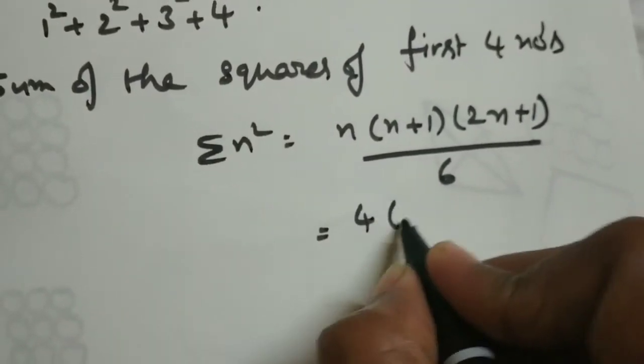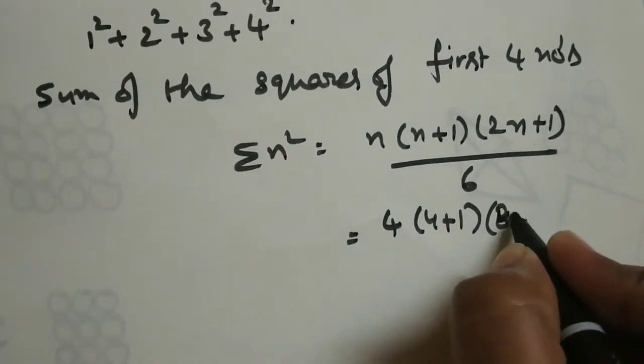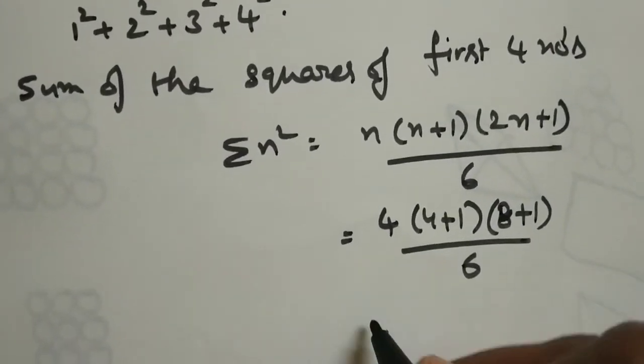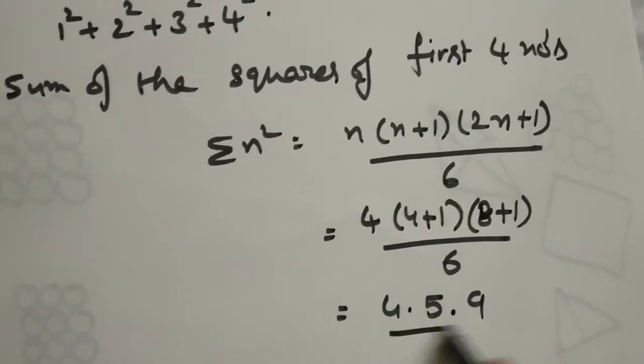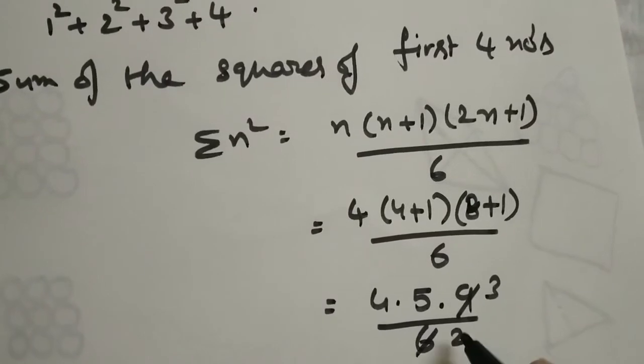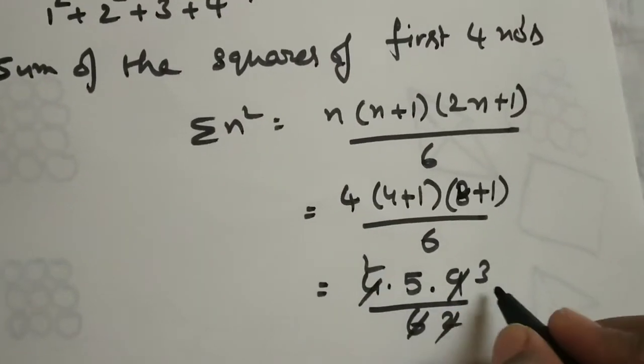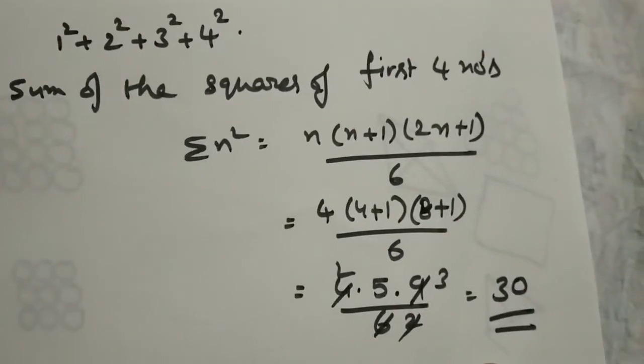Substitute. So, 4 into 4 plus 1 into 4 into 2, 8 plus 1 divided by 6. That is equal to 4 into 4 plus 1 is 5, 8 plus 1 is 9 divided by 6. Do the cancellations. 9 divided by 3 is 3, then divide by 2. So, 5 into 2 is 10, 10 into 3 is 30. Like that you are going to get as the answer.